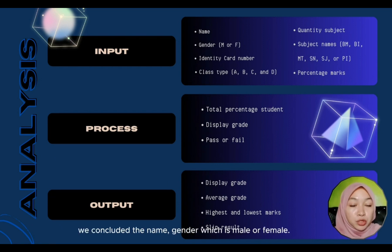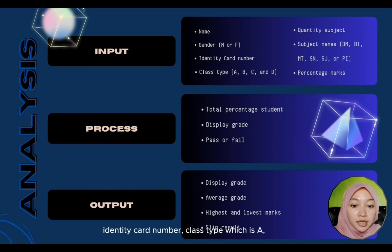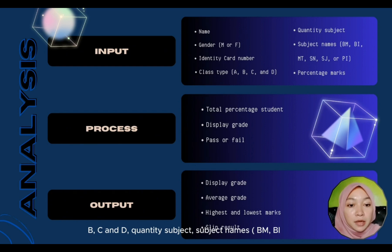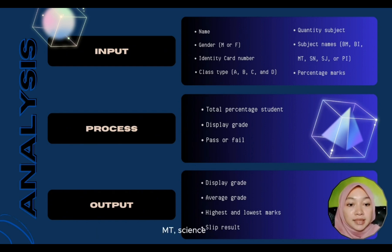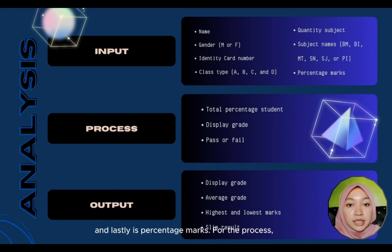In the input, we included the name, gender which is male or female, identity card number, class type which is A, B, C, and D, quantity of subjects, subject names BM, BI, MT, and lastly is percentage mark.